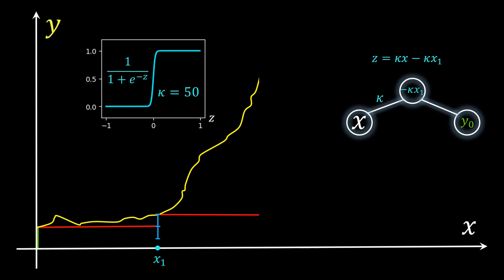Now the output neuron can simply add the output of the sigmoid function, and nothing will change before x1, and the output will be 1 higher after the red function. But we don't want to jump 1, but just epsilon. This can be done if the output neuron simply multiplies the output of the sigmoid neuron with epsilon. Now the red function increases exactly by epsilon.